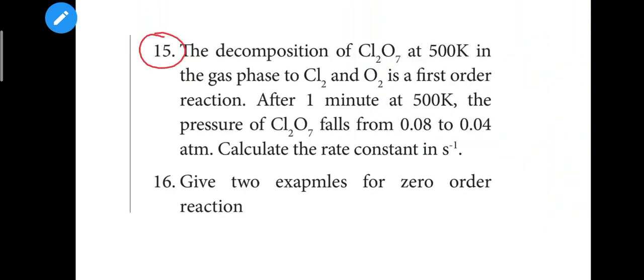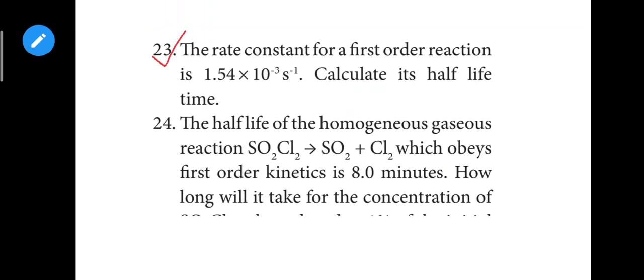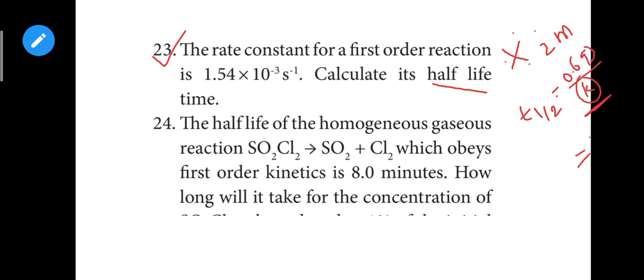Question 15: the decomposition of N2O5 to ozone — rate constant, also an important problem. The rate constant for a first order reaction is 1.54 — a very important 2-mark compulsory question. The half-life for a first order reaction: T½ = 0.693 / K. So rate constant for first order reaction — simple but very important problem expected publicly.